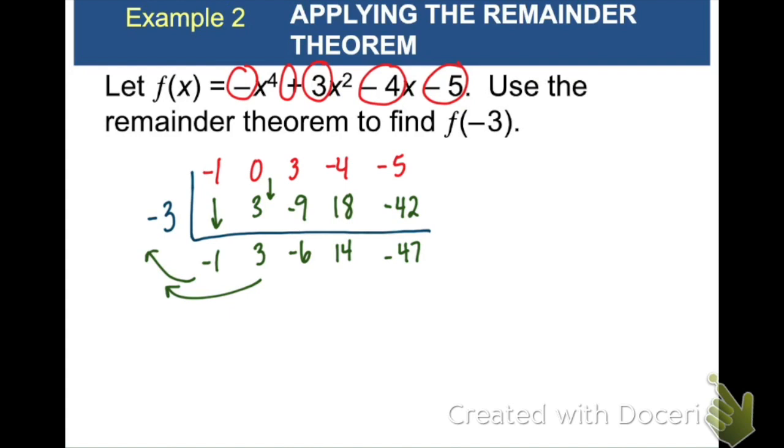Now in the last example, we wrote our final answer as a polynomial. We don't want to do that this time. We're not dividing two polynomials and writing the answer out. What we're doing is we're trying to find f of negative 3, which is equal to one number, negative 47, our remainder. So our final answer is f of negative 3 equals negative 47.